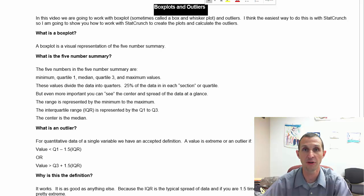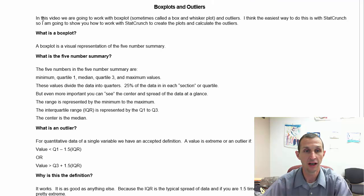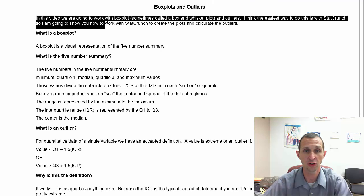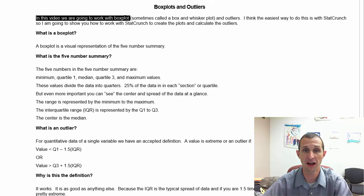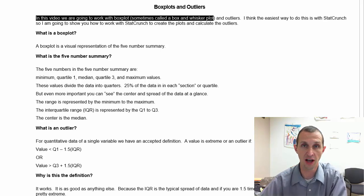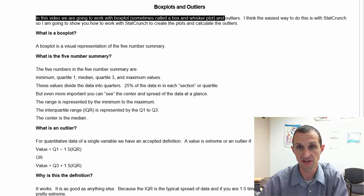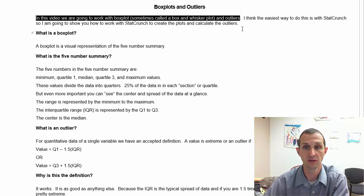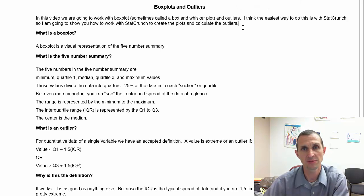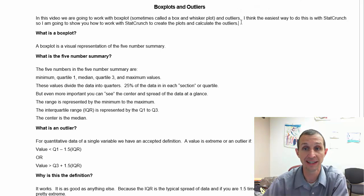To get right to the point, today we want to talk about box plots and outliers. We're going to work with box plots — sometimes called a box and whisker plot for obvious reasons because of the shape — and outliers. Box plots and the five number summary lend themselves to the calculation of outliers.